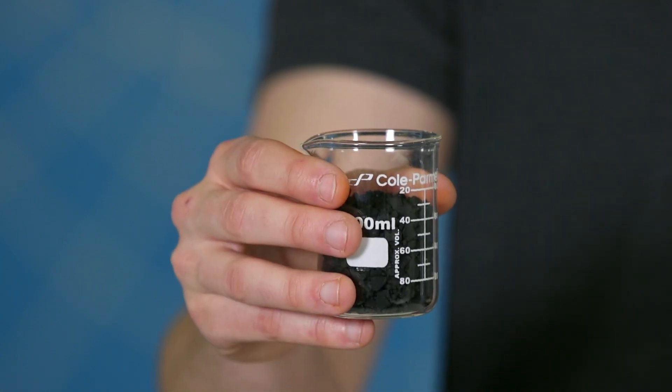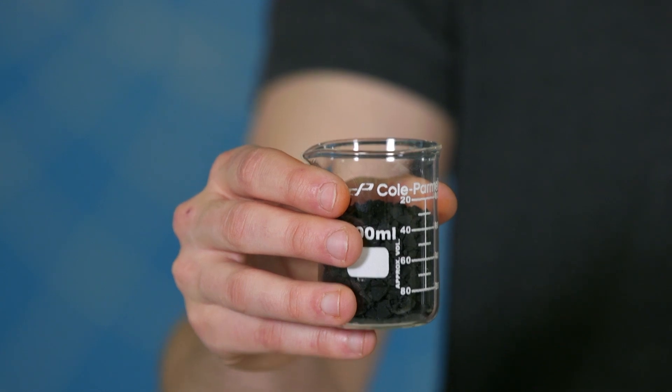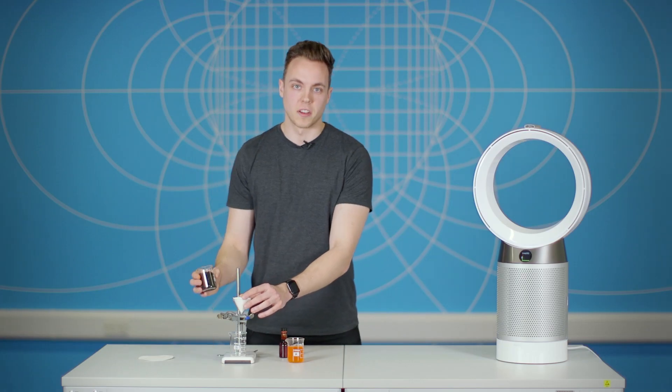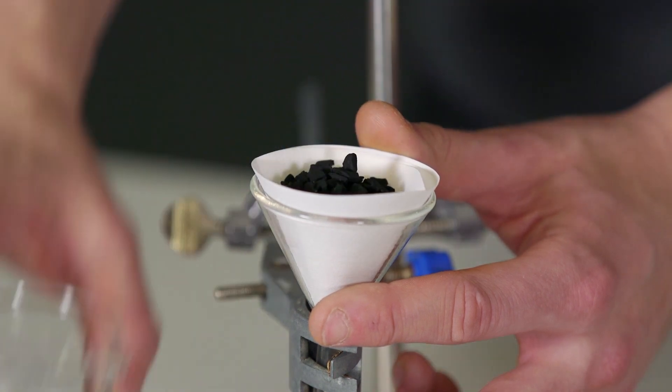These are activated carbon granules. You can't tell, but each granule contains an extensive network of microscopic pores. I'm then going to add some of the carbon to the filter paper inside the funnel. Around two to three teaspoons should be enough.